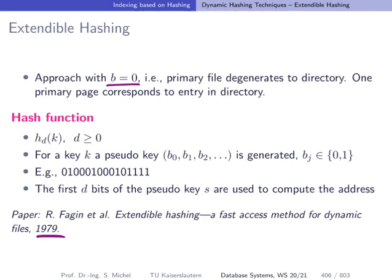Let's have a look at the hash function. For the hash function, we consider a key k, for which we create a pseudo key consisting of bits. For instance, we take some matriculation number, we look at the bits here, and the bits here are not the bits corresponding to the matriculation number, but this is really hashed. So it's uniform distribution of these bits.